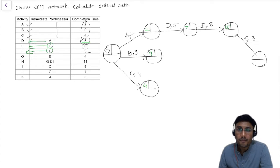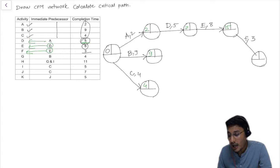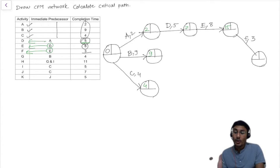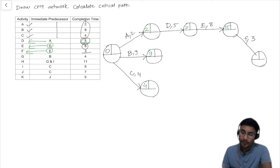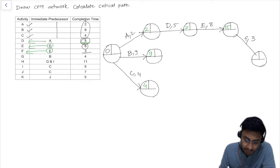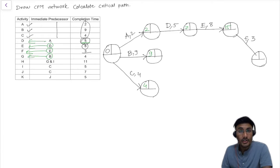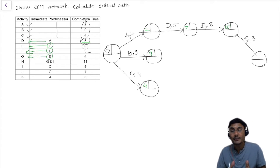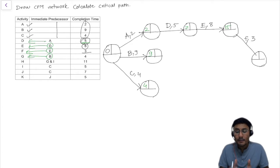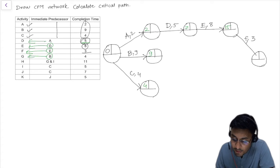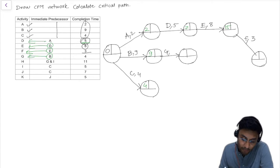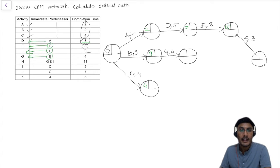For F: 15 plus 3, but we need to wait and look at the maximum value that will be coming at this point. Going back to our table, B activity finishes and then G activity is going to start. Once B activity completes, G activity starts — G activity has a duration of 4. So 9 plus 4 is 13, so we write 13 there.